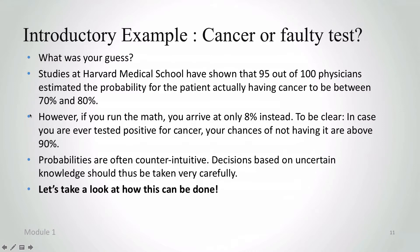What we take away from this short example is that probabilities are often counterintuitive. Decisions based on uncertain knowledge thus should be taken very, very carefully. And in this whole course we're going to take a look at how this can be done. Let's move forward.